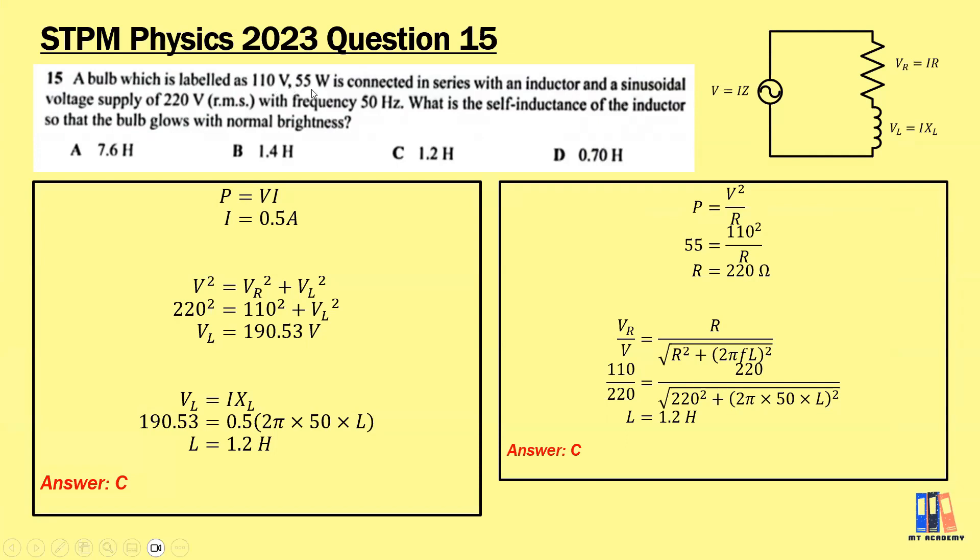Let's go to the last question. A bulb labeled as 110 volt, 55 watt is connected in series with an inductor and a sinusoidal voltage supply of 220 volt root mean square with frequency 50 hertz. What is the self-inductance of the inductor so that the bulb glows with normal brightness? You should have seen this rating before in SPM: the bulb should be connected to 110 volt to have normal brightness. Referring to this circuit, the bulb is the resistor and should be 110 volt. To obtain the self-inductance of the inductor, we can find the voltage or current.